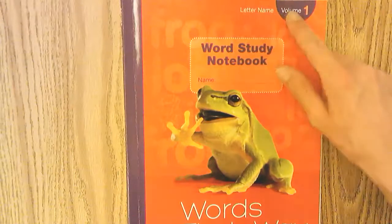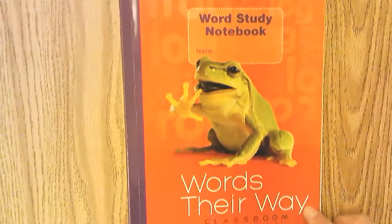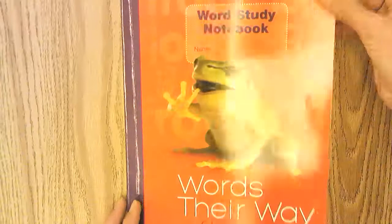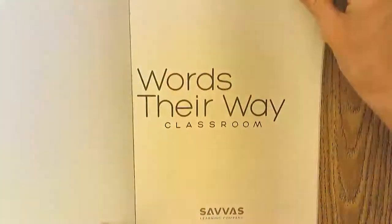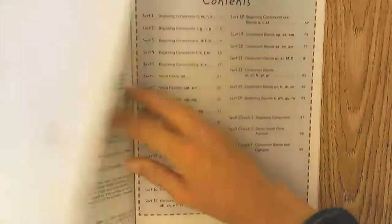This one is the letter name, volume one, Words Their Way. First, to detach the pages for your word sort, you need to fold your book along the dotted lines.